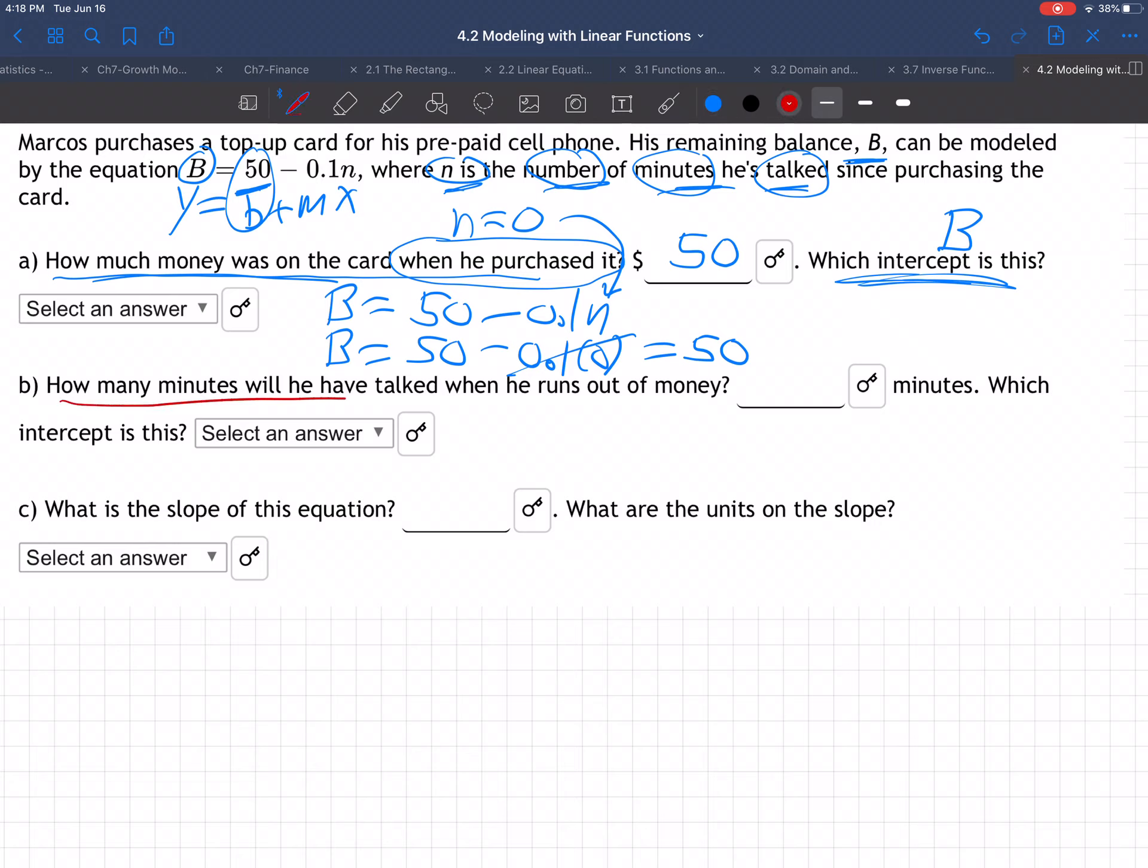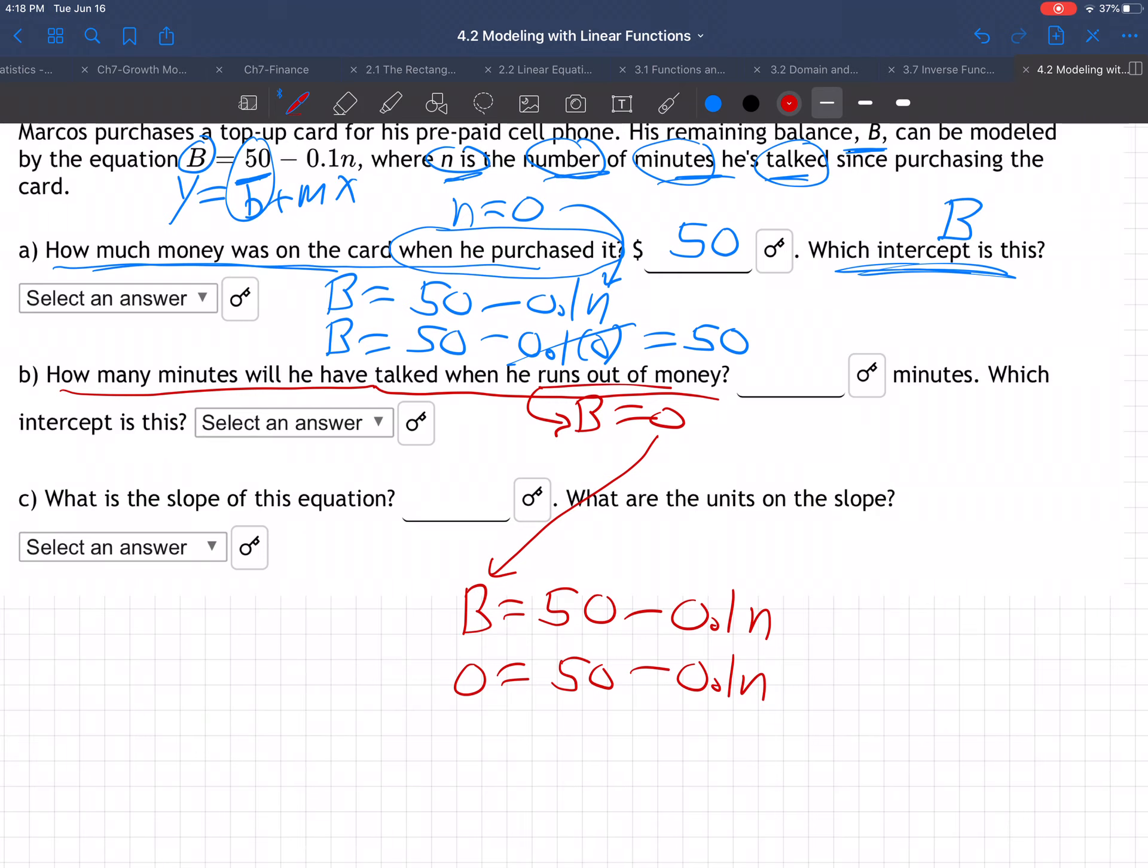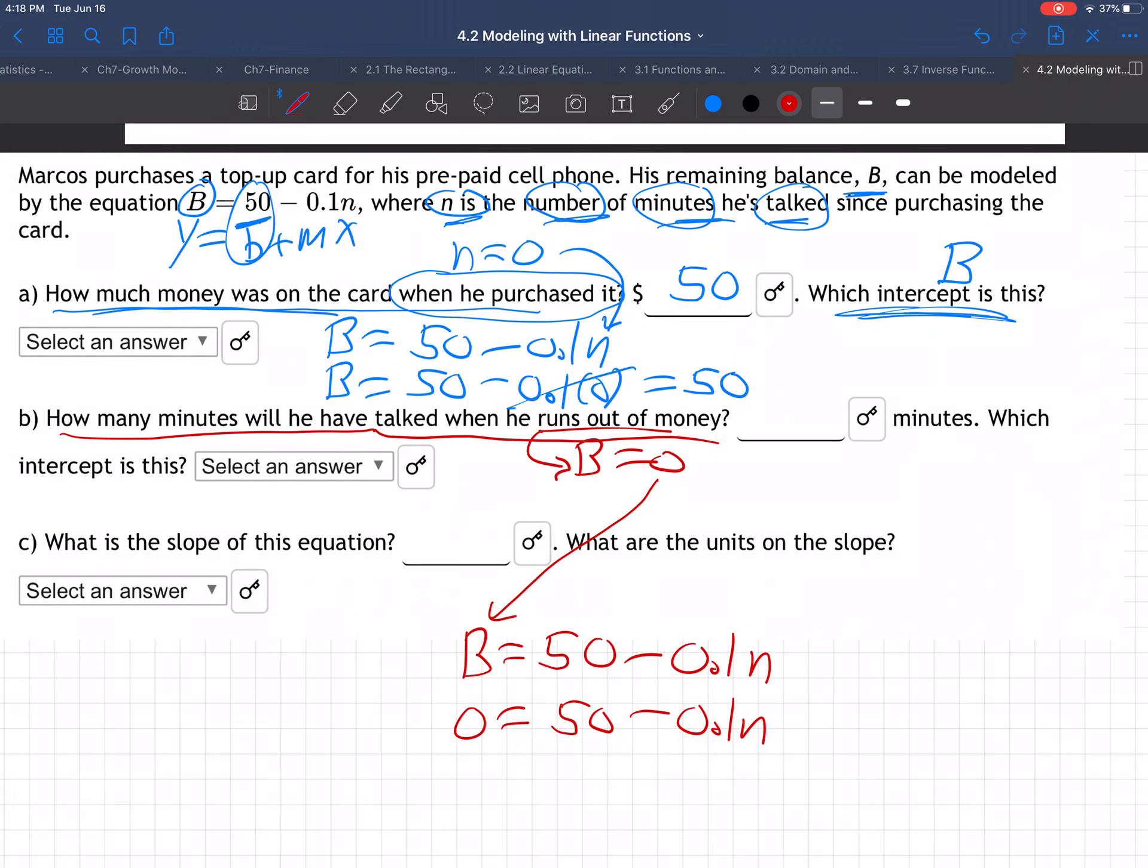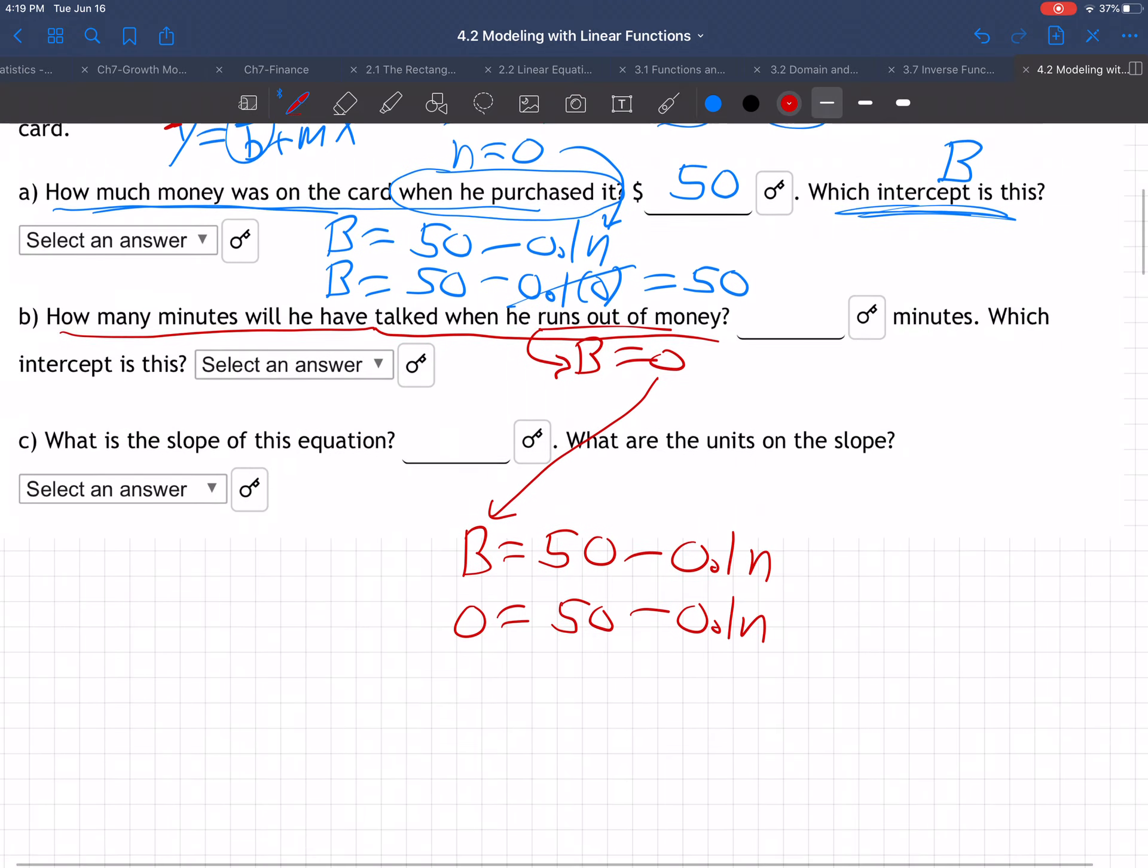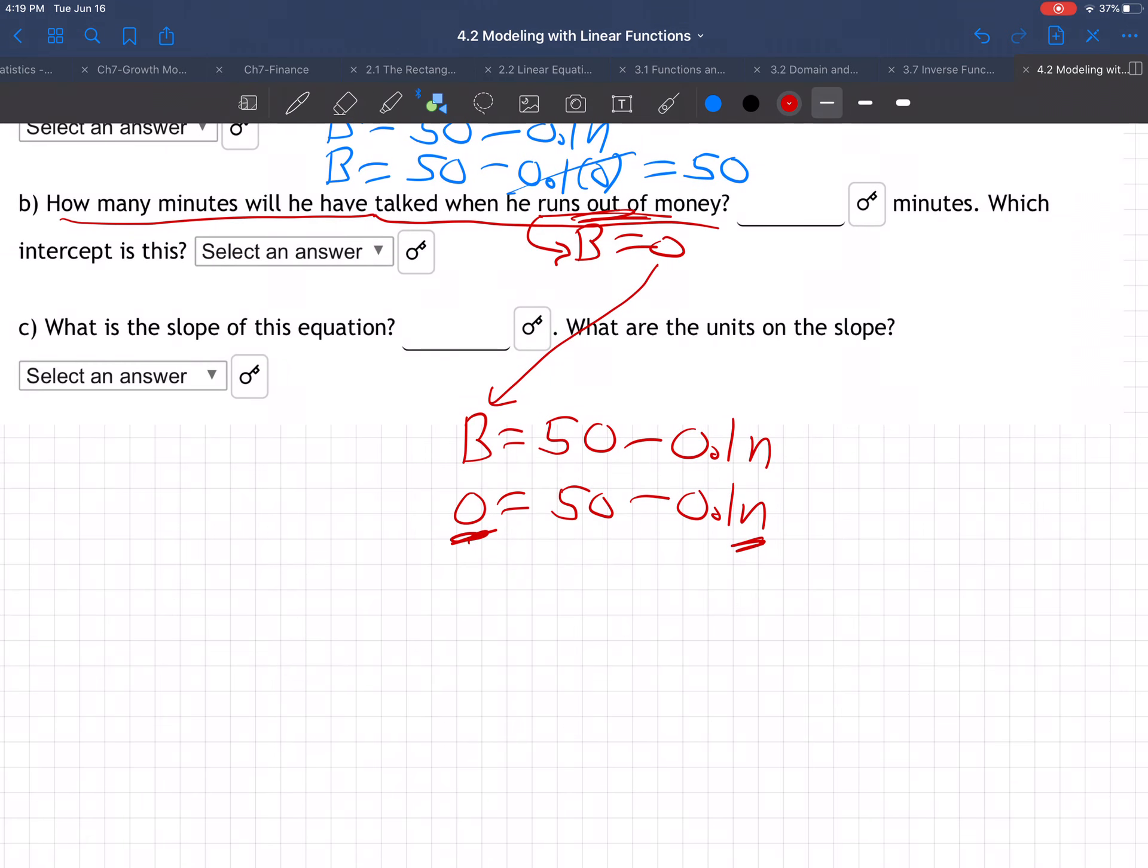Next question: How many minutes will he have talked when he runs out of money? When he runs out of money, B is zero. Take the equation B = 50 - 0.1N and plug in B as zero. The equation connects the balance on the card and the number of minutes Marcos has talked. We need to solve for N, the number of minutes when the balance becomes zero.